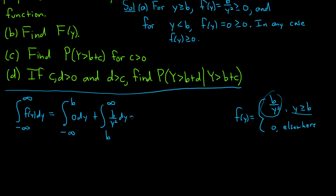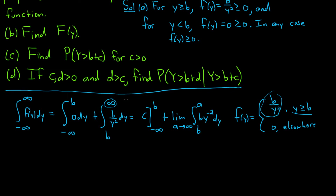The first integral of zero gives a constant. To handle the improper integral, we replace infinity with a variable a and take the limit as a goes to infinity, and write b times y to the negative two. Similarly on the left, we write the limit as a goes to negative infinity. So we have: limit as a goes to negative infinity of C from a to b, plus limit as a goes to infinity. Integrating b y to the negative two gives negative b y to the negative one, evaluated from b to a.